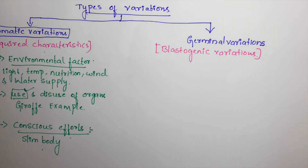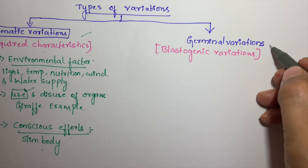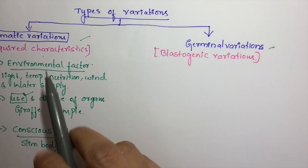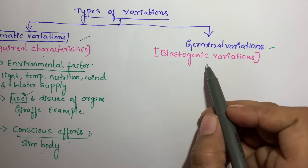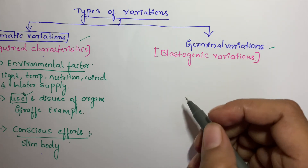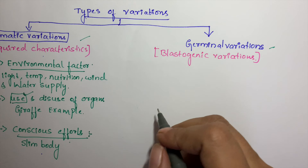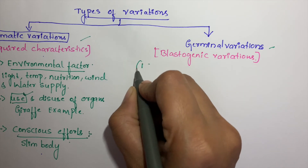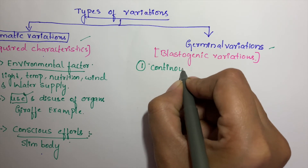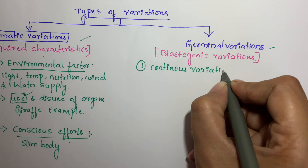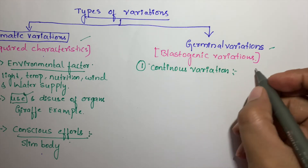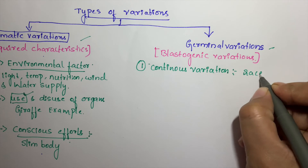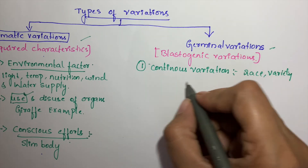Moving on to germinal variations: these are inherited variations formed mostly in germinal cells. Germinal cells are the cells involved in reproduction; all other cells are somatic cells. These variations are either already present in ancestors or develop as new mutations and then pass on to the next generation. There are two types of germinal variations. The first is continuous variation — also called fluctuating variation — where changes keep fluctuating and are mainly due to race, variety, and species.